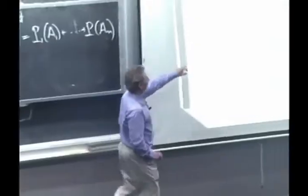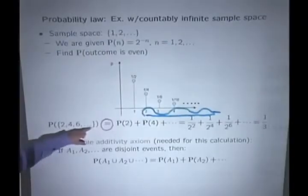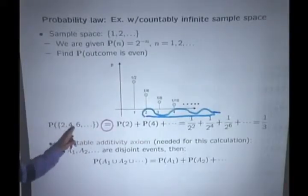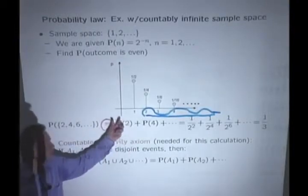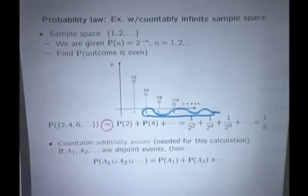But here we're using it on an infinite collection. The probability of infinitely many points is equal to the sum of the probabilities of each one of these. To justify this step, we need to introduce one additional rule, an additional axiom, that tells us that this step is actually legitimate.